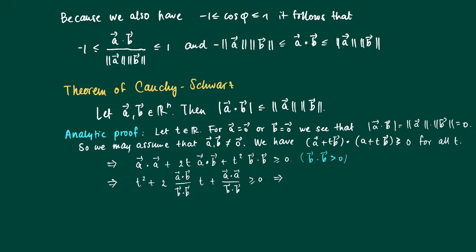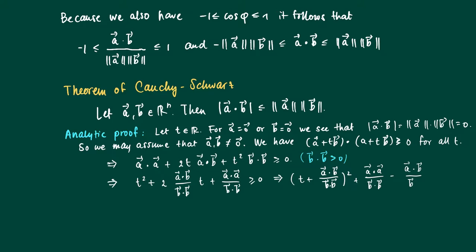Now we split off a squared term by writing t plus the inner product of a and b divided by the inner product of b with itself, squared. This gives us the 2 times ab divided by b squared times t term. We get a term involving a·b minus b minus the inner product of a·b and b·b squared. This is still at least 0 and holds for all t.